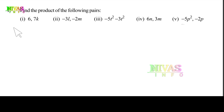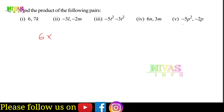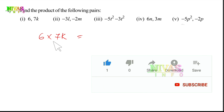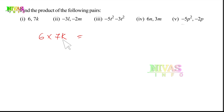First, 6 and 7K. So we have 6 into 7K. Here, 6 is a constant and 7K is a variable with coefficient. We multiply the numbers directly: 6 into 7 is 42. So the product of 6 into 7K is 42K.